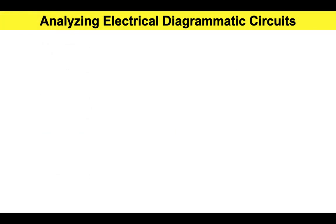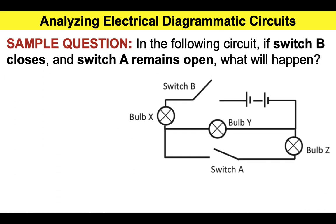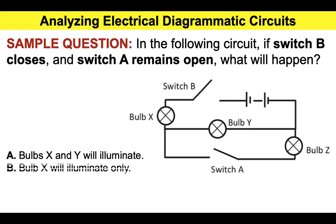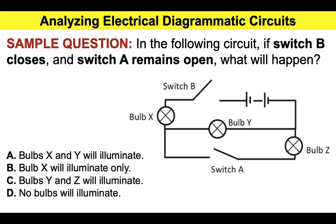So let's take a look at some sample questions before we move on to some questions that you can try under timed conditions. Here's a sample electrical comprehension test question. In the following circuit, if switch B closes and switch A remains open, what will happen? You are given multiple choice options: A, bulbs X and Y will illuminate; B, bulb X will illuminate only; C, bulbs Y and C will illuminate; or D, no bulbs will illuminate.